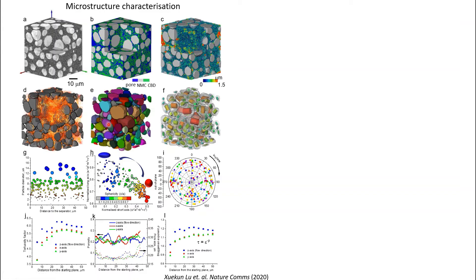Identifying each individual particle, we can extract the particle morphological information such as particle size, orientation, and shape. At each depth of the electrode, we see a large variation of particle size ranging from 4 microns to 15 microns. The shape of the particle also ranges from spherical to flake, somehow related to the particle size. They are randomly oriented in the volume of the electrodes.